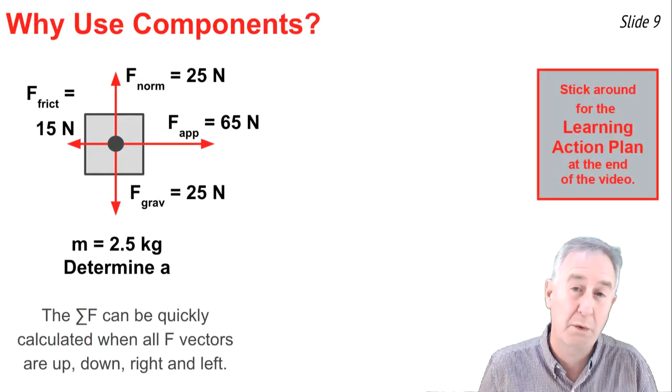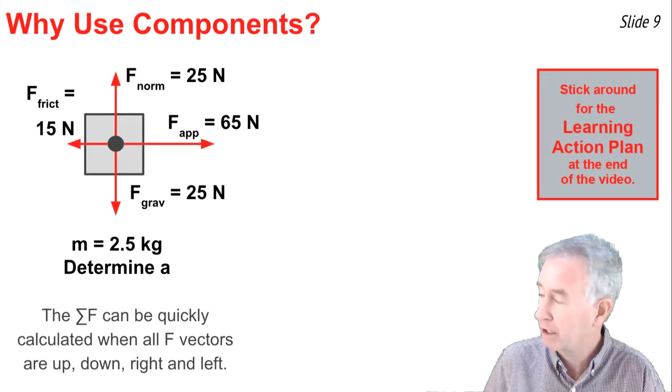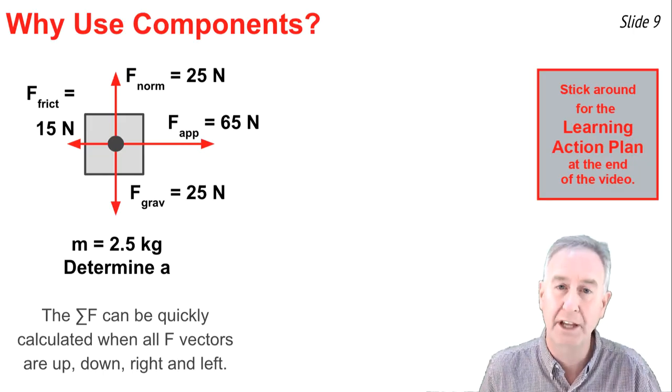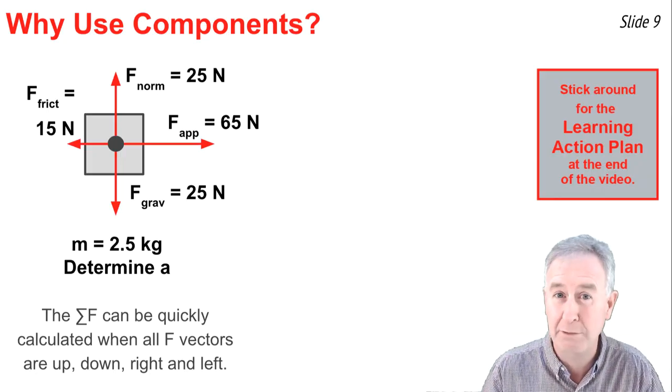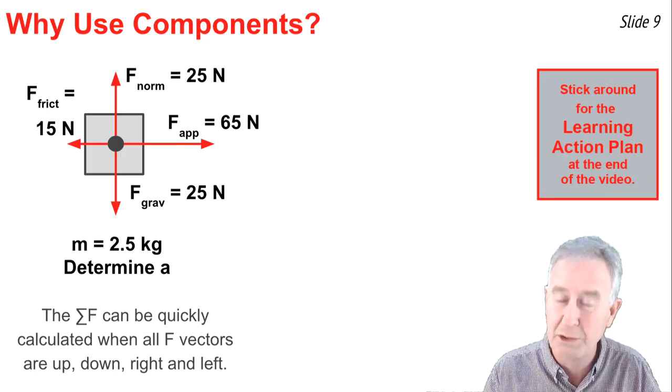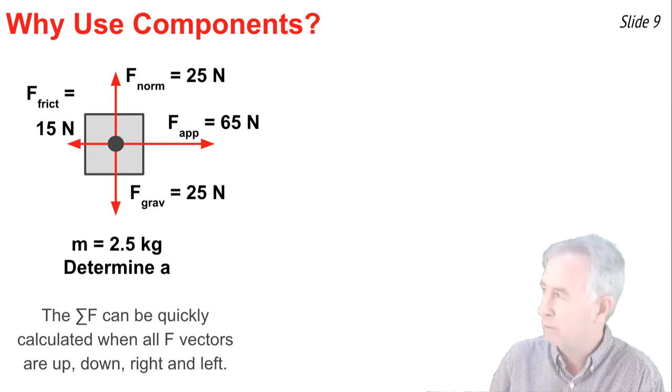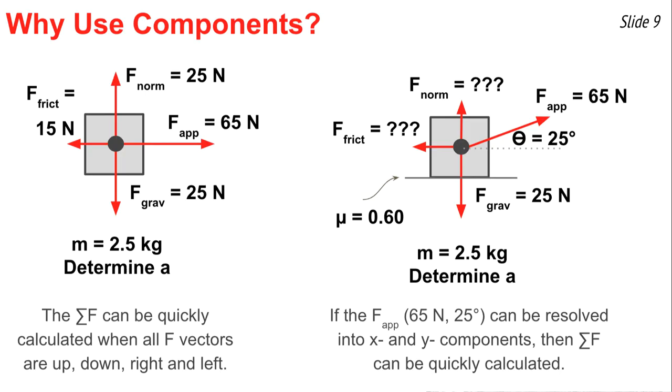It's a fair question to ask, why do we need components? And the answer is because this problem is simple. It's simple to take the 25 and the 25 and the 65 and the 15 and add them up to get the net force, since they all go in opposite directions or at right angles to one another. Because this problem is simple, it would be useful to make every problem look like it. This problem here is not simple because the 65 newtons at an angle of 25 degrees cannot easily be added to the other force vectors. But if it can be resolved into an fx and fy component, then it would be much more easier to find the vector sum of all the forces. And that's why we need components.